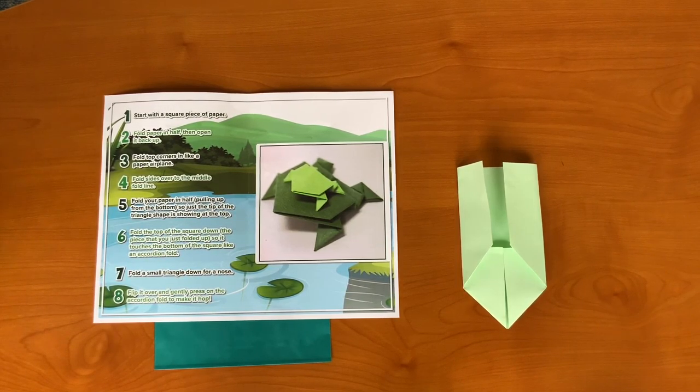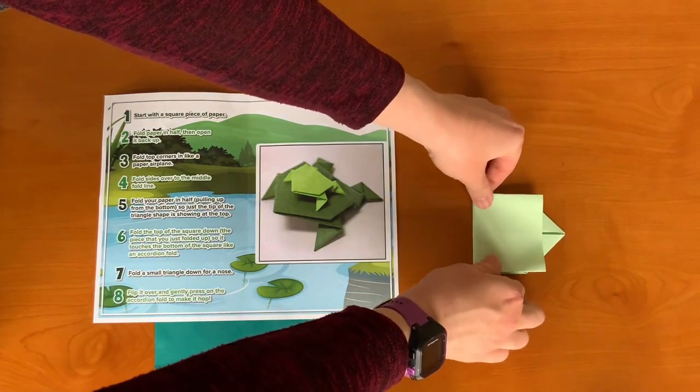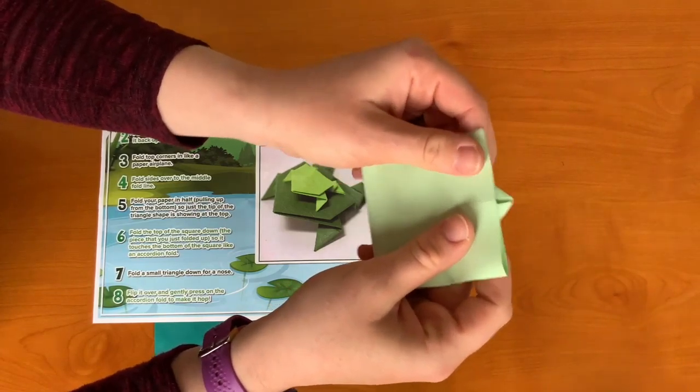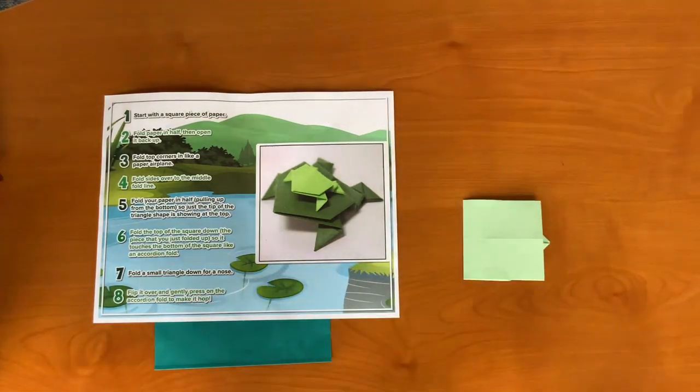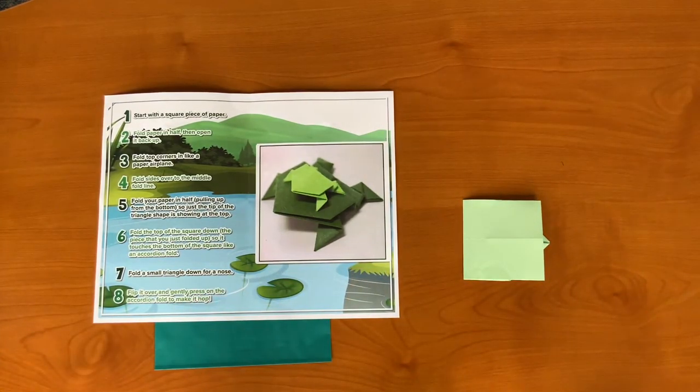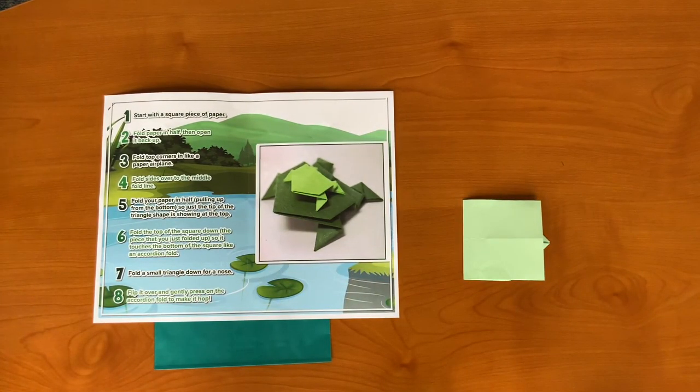Step five, fold your paper in half pulling up from the bottom so just the tip of the triangle is showing at the top.